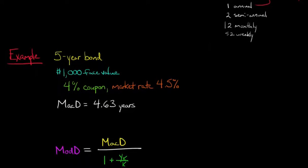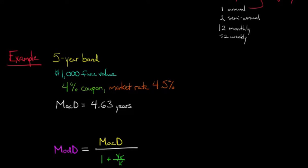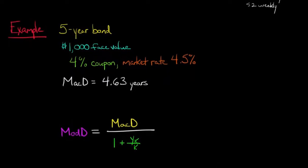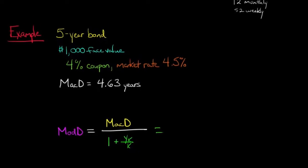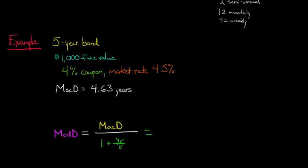Now we can use our formula from before to compute the modified duration. So all we're going to do is just a little plugging and chugging. Our Macaulay duration is 4.63 years, so we'll just put 4.63, and then now in the denominator...